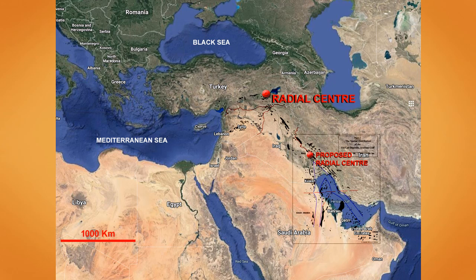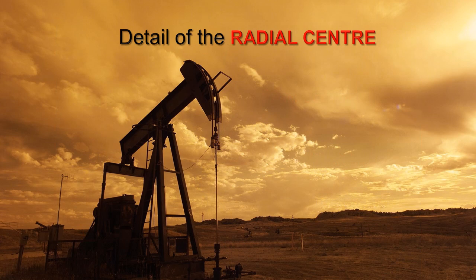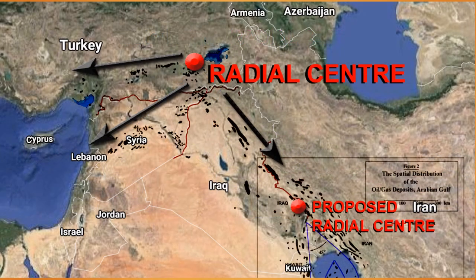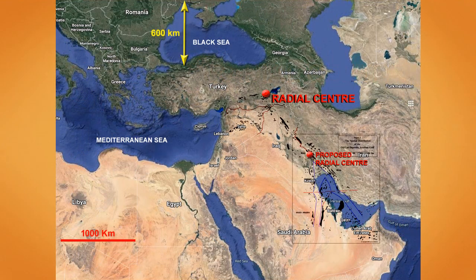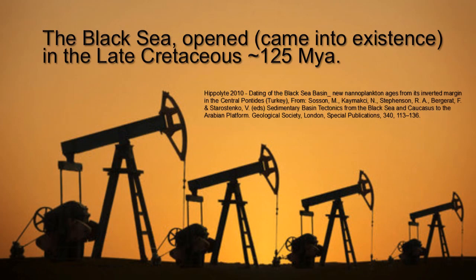Here one can see the long, thin, linear oil pools trending between the proposed radial center and the actual radial center in Turkey. The following map shows detail of the radial center currently located in eastern Turkey. Note the 600 kilometer width of the Black Sea. The Black Sea came into existence approximately 125 million years ago.